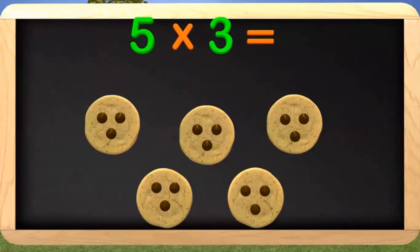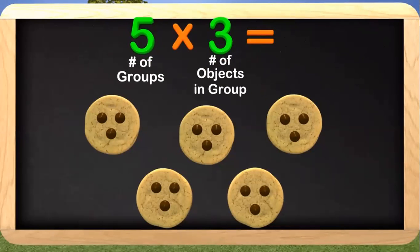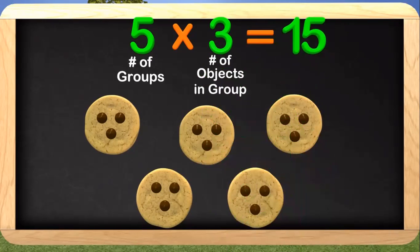My robot brought me some cookies, but how is that going to help me? He wants me to look at different ways to multiply, and drawing a picture is a good way to do this. When multiplying, we can look at the 5 as being the number of groups, and the 3 as the number of objects in the group. These cookies show this concept. There are 5 cookies and they are the number of groups. On each cookie there are 3 chocolate chips, and they are the number of objects in each group. Can you tell me how many chocolate chips there are in all? There are 15 chocolate chips!